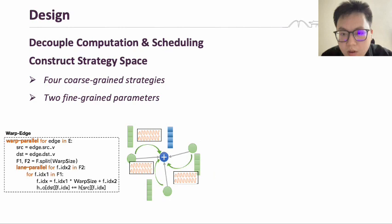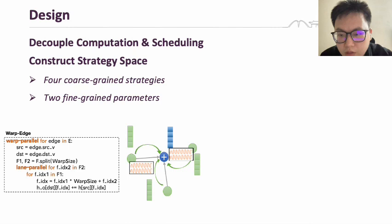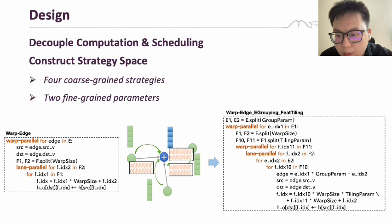Meanwhile, we further implement two fine-grain control parameters on top of these four coarse-grain strategies. The first one is vertex-edge level grouping, which transforms the previous one-to-one mapping into one-to-many mapping. The second is feature tiling, which allows us to allocate multiple threads or warps in the feature dimensions. Together, these parameters allow us to create a comprehensive strategy space based on our unified abstractions.